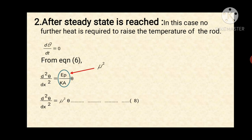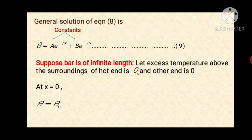Second case: after steady state is reached. In this case there is no need for further heat supply because steady state is reached, so dθ/dt equals zero — meaning change in temperature with respect to time is zero. From equation six we can write d²θ/dx² equals (ep/K)·θ. Taking ep/K as μ², we get d²θ/dx² equals μ²θ, equation eight. The general solution of equation eight is θ = A·e^(+μx) + B·e^(−μx), equation nine, where A and B are constants.